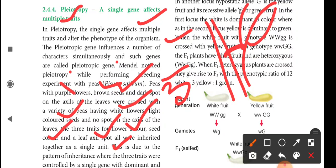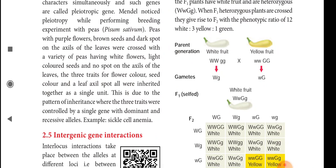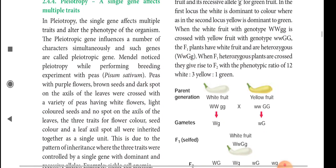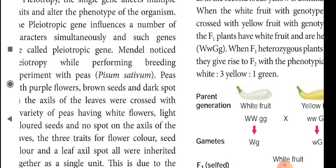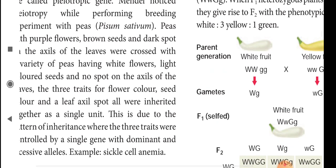This is due to the pattern of inheritance where the three traits were controlled by genes with dominant and recessive alleles. For example, sickle cell anemia. In pleiotrophy, a single gene can affect multiple traits. Three characters — flower color (white and purple), seed color (brown and light), and leaf axil spots — are transmitted through the same generation via a single gene. Such types of genes are called pleiotropic genes.